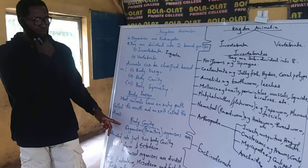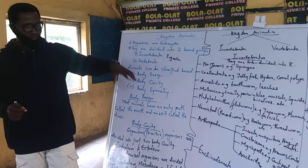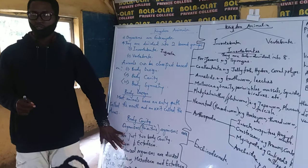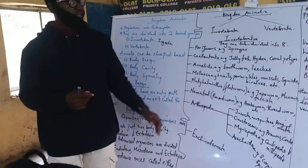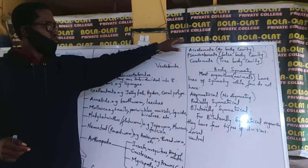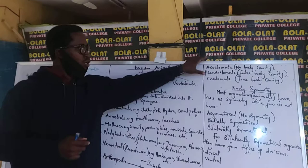Now, body cavity. Primitive organisms are divided into two body layers: that's your ectoderm and your endoderm. But more advanced organisms are divided into three, which is your endoderm, mesoderm, and ectoderm. When we say body cavity, we are talking about the three forms of advanced body cavity: the acoelomate, the pseudocoelomate, and the coelomate.